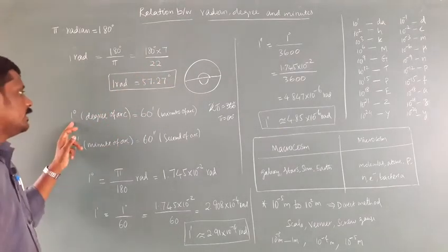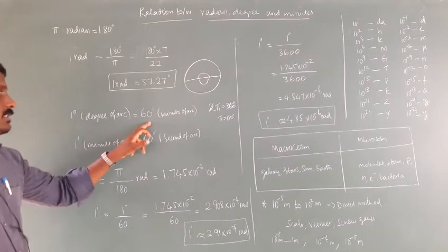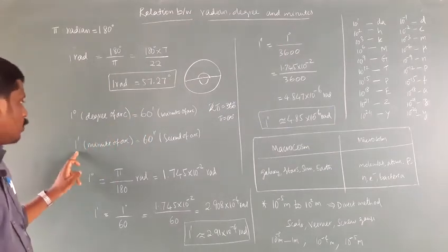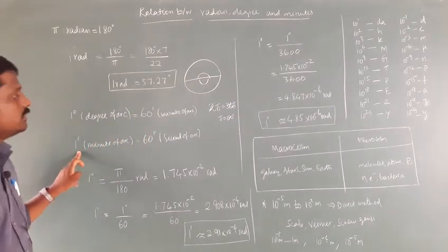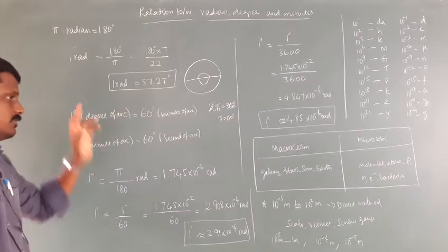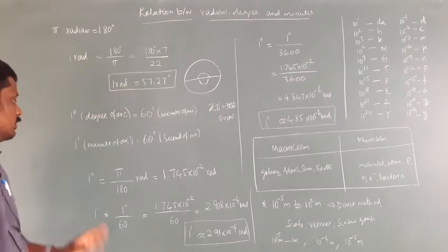1 degree is equal to 60 minutes, and 1 minute is equal to 60 seconds. So these things we have already known.